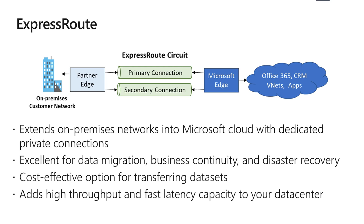With this ExpressRoute connection to Azure at the ExpressRoute location — which is the data center — such as an exchange providing facility, or directly connect to Azure from your existing WAN network, such as an MPLS VPN provided by a network service provider.